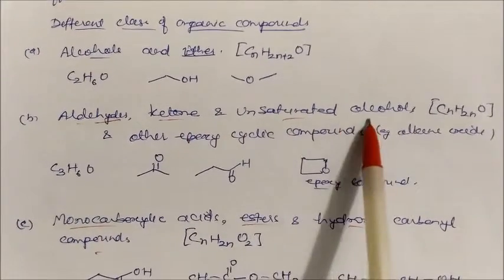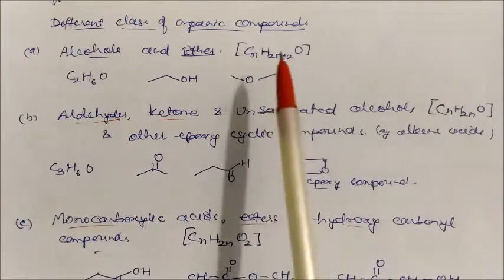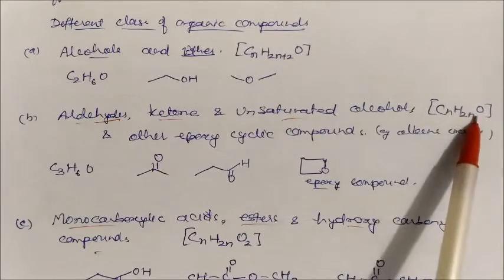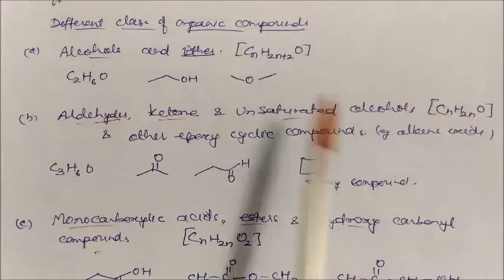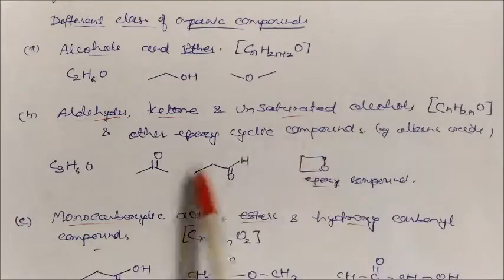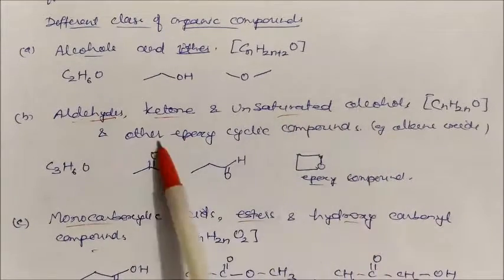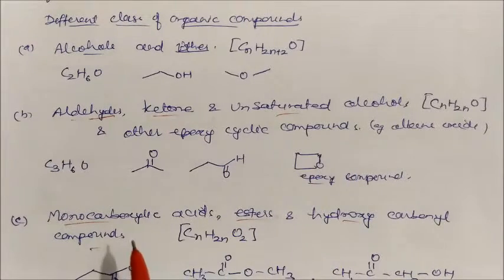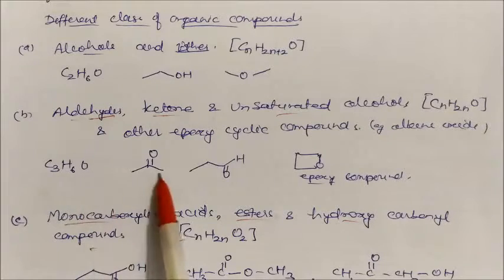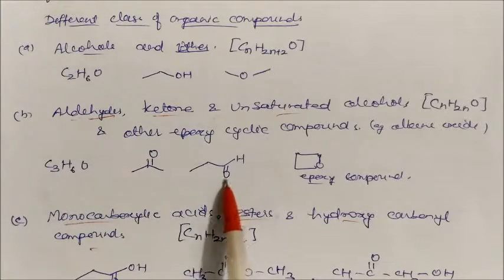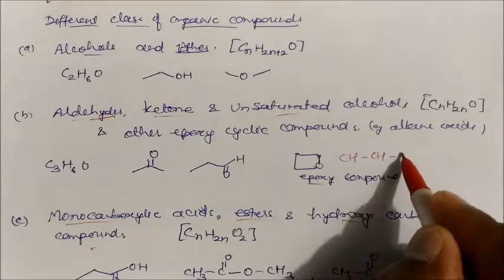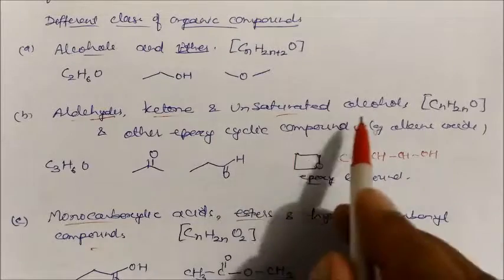The next group is aldehydes, ketones, and unsaturated alcohols, with formula CnH2nO (alkene + single oxygen). This formula is very important when solving numericals in organic chemistry. So aldehydes, ketones, and unsaturated alcohols all share the formula CnH2nO.